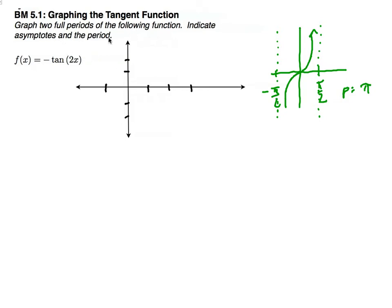I ask us to graph two full periods of the following function and also indicate the asymptotes and the period. I have a graph of a regular tangent function. This is very different than the sine and cosine because sine and cosine are defined for all real numbers. However, tangent is not. Since tangent is a ratio of the opposite to the adjacent sides, or y to x on a unit circle, x is 0 on the y-axis. So if I'm looking at an angle like π/2 or 3π/2, I have an undefined term, or an asymptote.